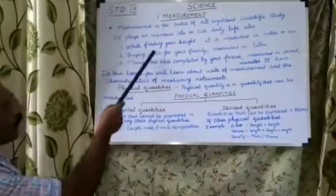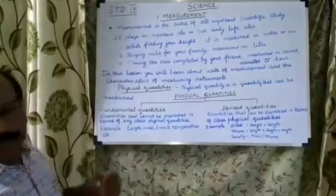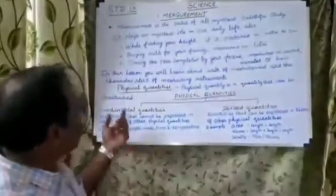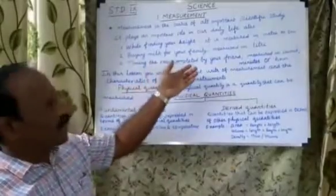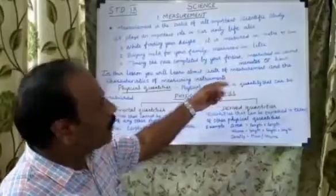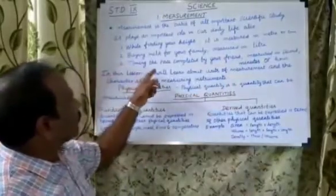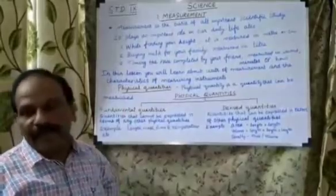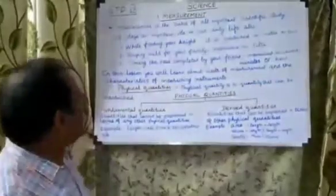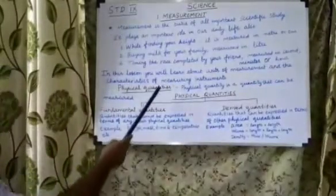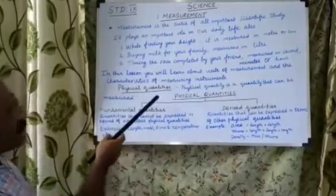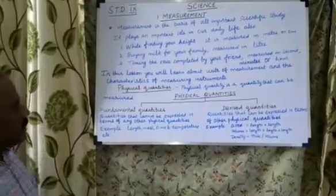First, while finding your height, it is measured in centimeter or meter. Next, buying milk for your family — volume is measured in liter. Next, timing the race completed by your friend, measured in seconds, minutes or hours. In this lesson, you will learn about units of measurements under the characteristics of measuring instruments.